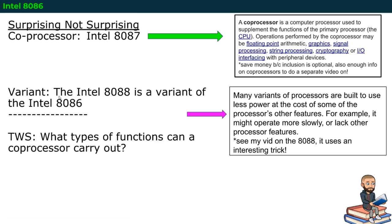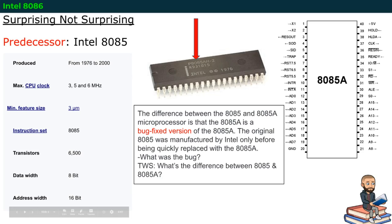If you hear the term variant, it says that there are many variants of processors built to use less power at the cost of some of the processor's other features. So you could choose a variant depending on your needs. To really wrap your mind around the difference between the 8088 and the 8086, you can watch my video specifically about the 8088. In fact, I made a video on the 8080, which came before 8086. Even that was drastically different than the 8086.